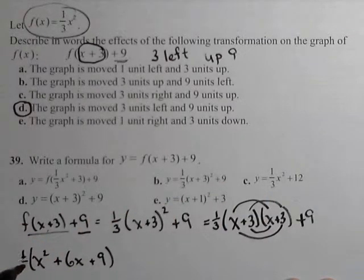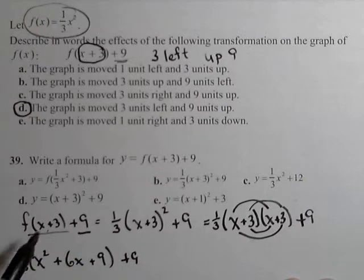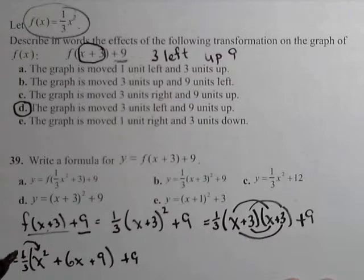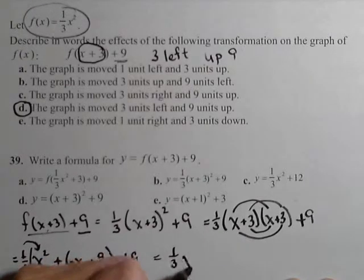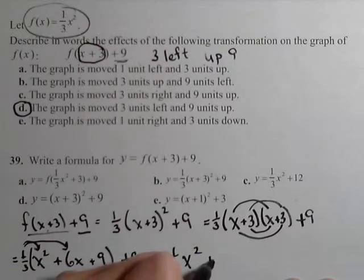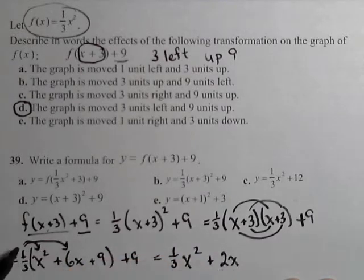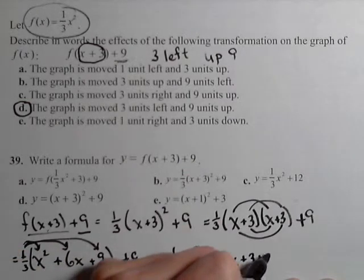Now this whole thing needs to get multiplied by one-third, and then we'll add nine at the end. So distributing the one-third, we have a one-third x squared, one-third times six is two, so plus two x. And then one-third times nine is plus three, plus nine.